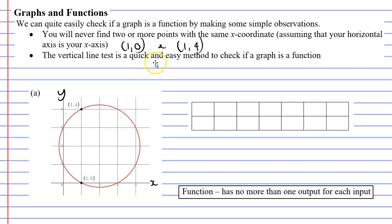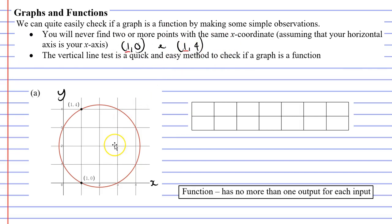Why did I choose to label these two points? You might notice that both of these points have the same x coordinate. And so by definition this is not a function. The dot point says: if it's a function you will never find two or more points with the same x coordinate. We've found two points that have the same x coordinate of 1.